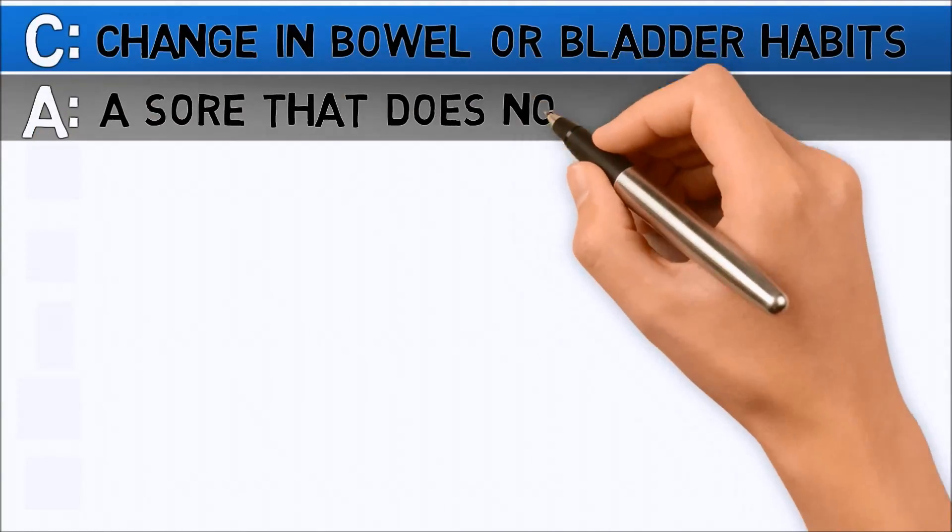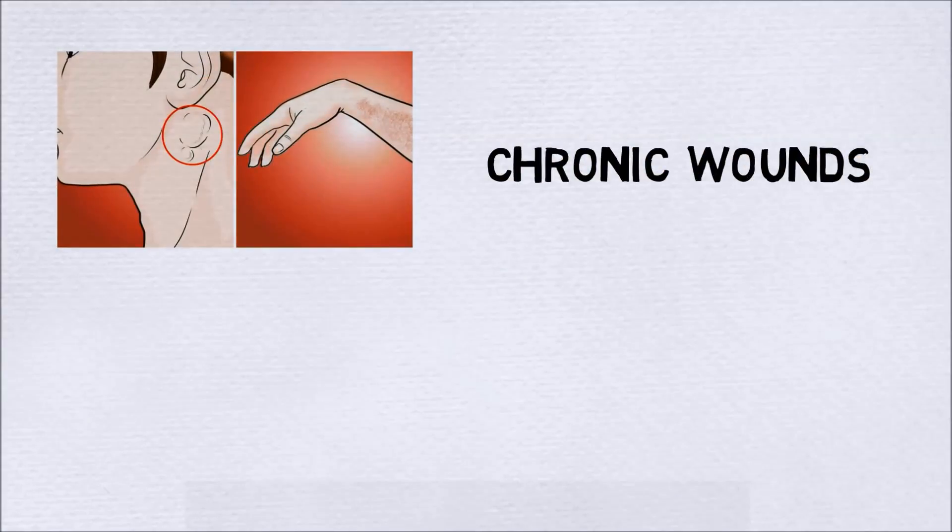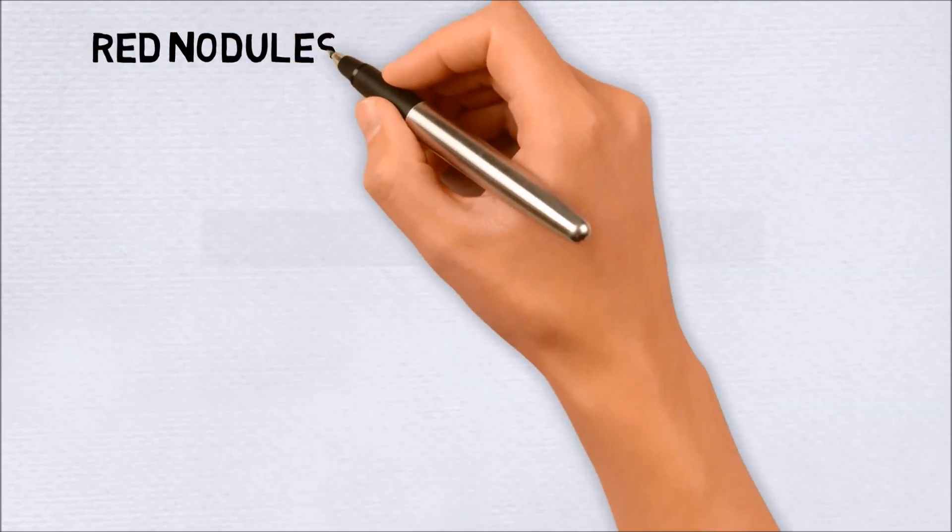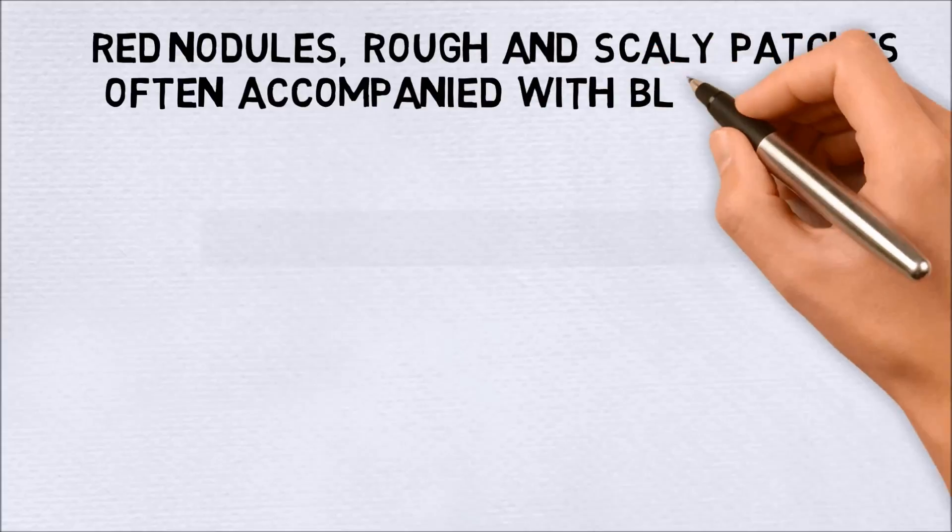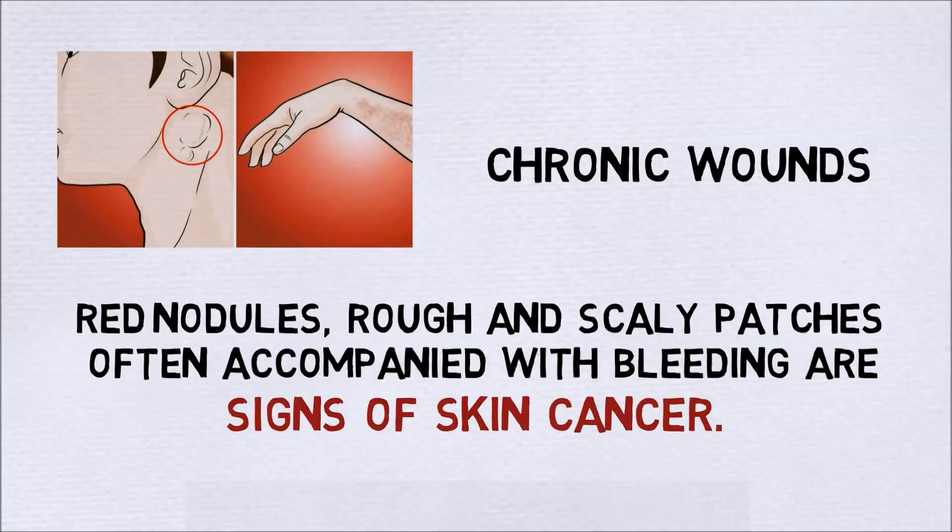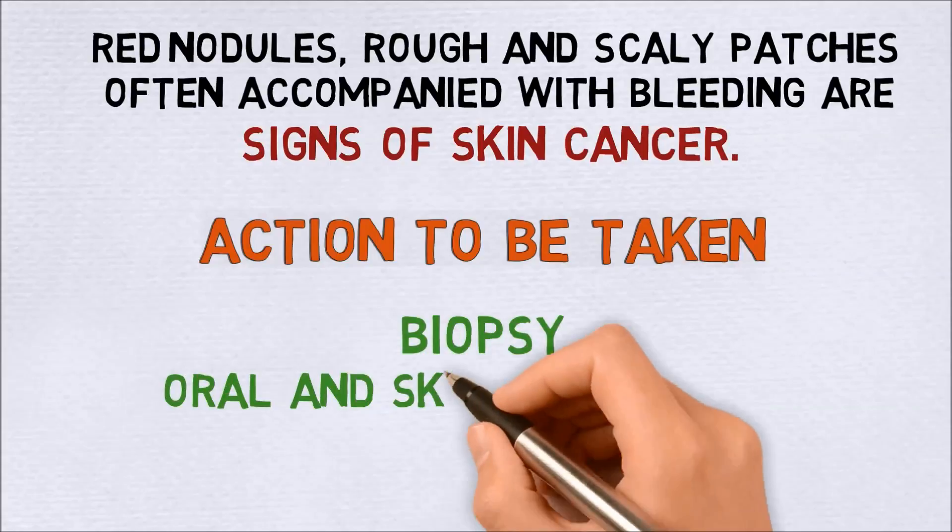A Sore that does not heal. Lesions or sores that do not heal for over three months are considered as chronic wounds. Red nodules, rough and scaly patches often accompanied with bleeding are the signs of skin cancer. Actions to be taken are biopsy, oral and skin examination.